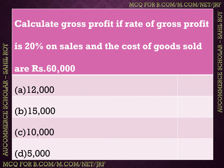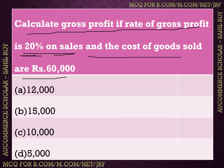The next question is: calculate gross profit if the rate of gross profit is 20% and the cost of goods sold is Rs. 60,000. When you solve this question, the answer is Rs. 12,000. So the correct answer is Rs. 12,000.